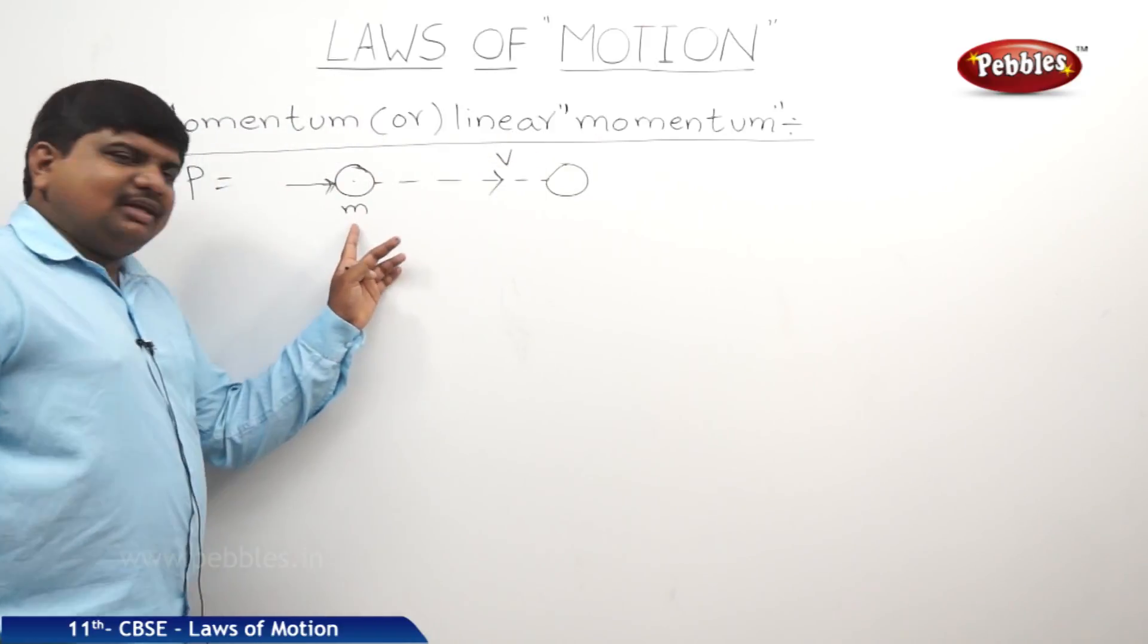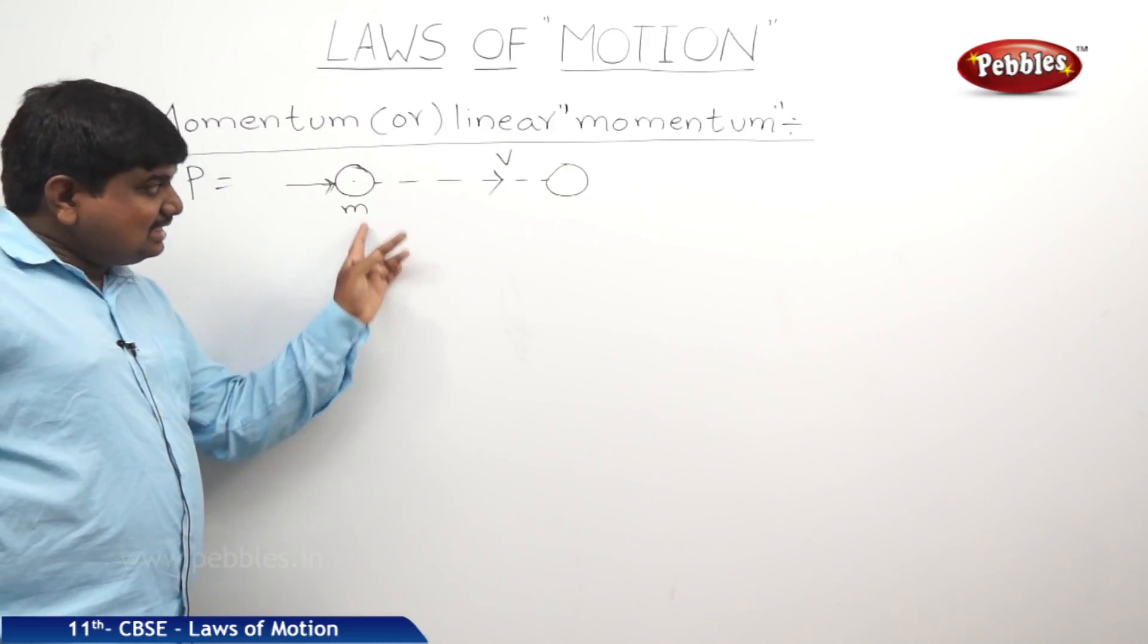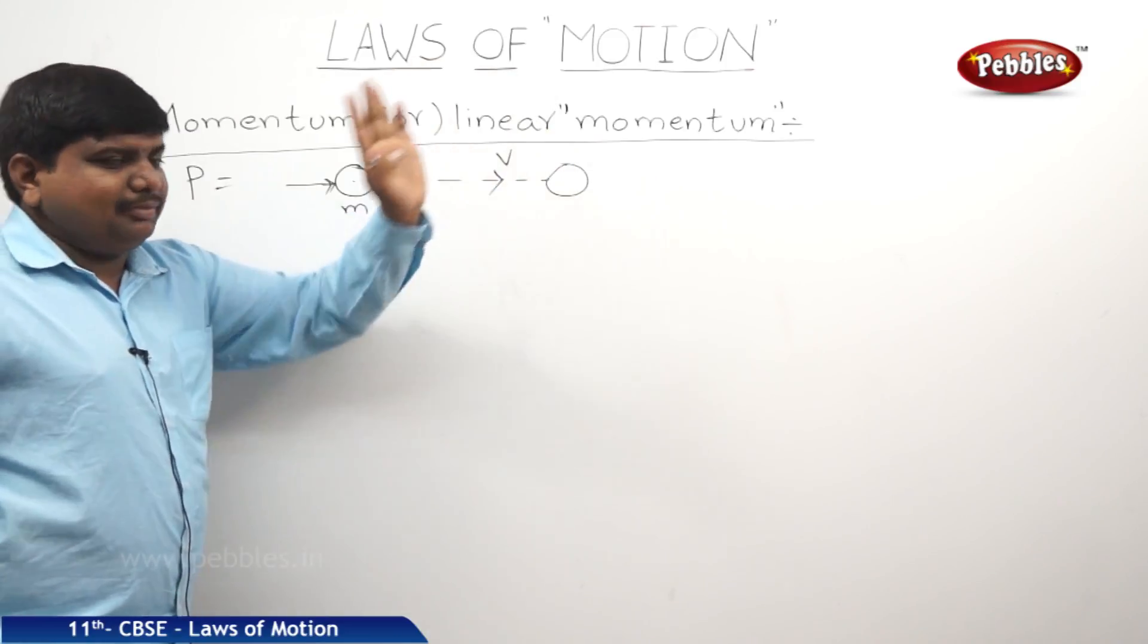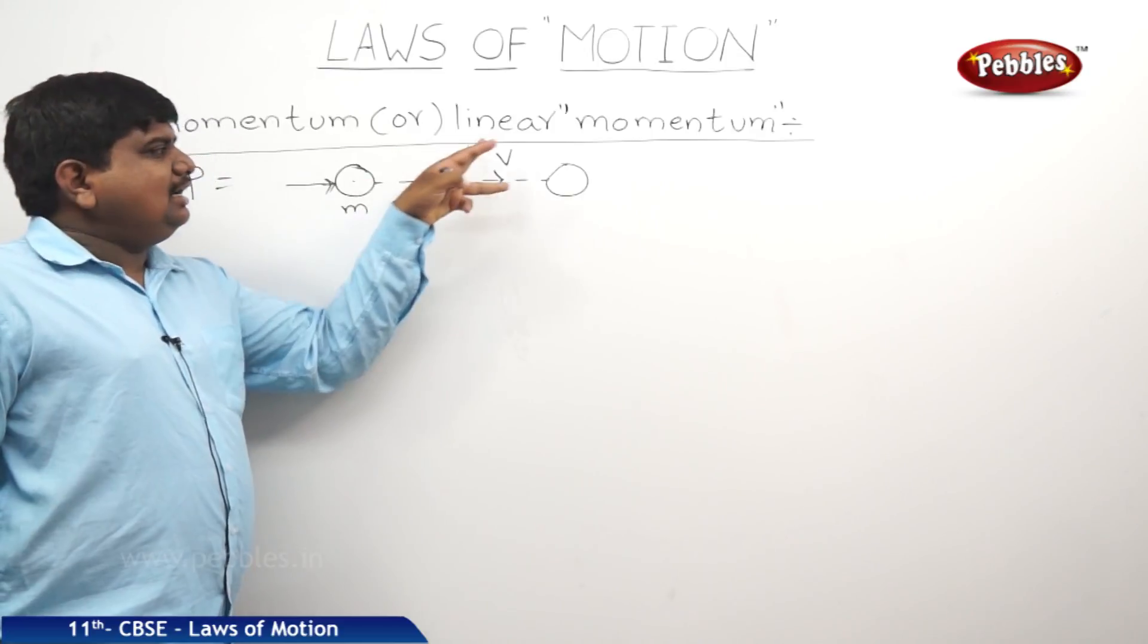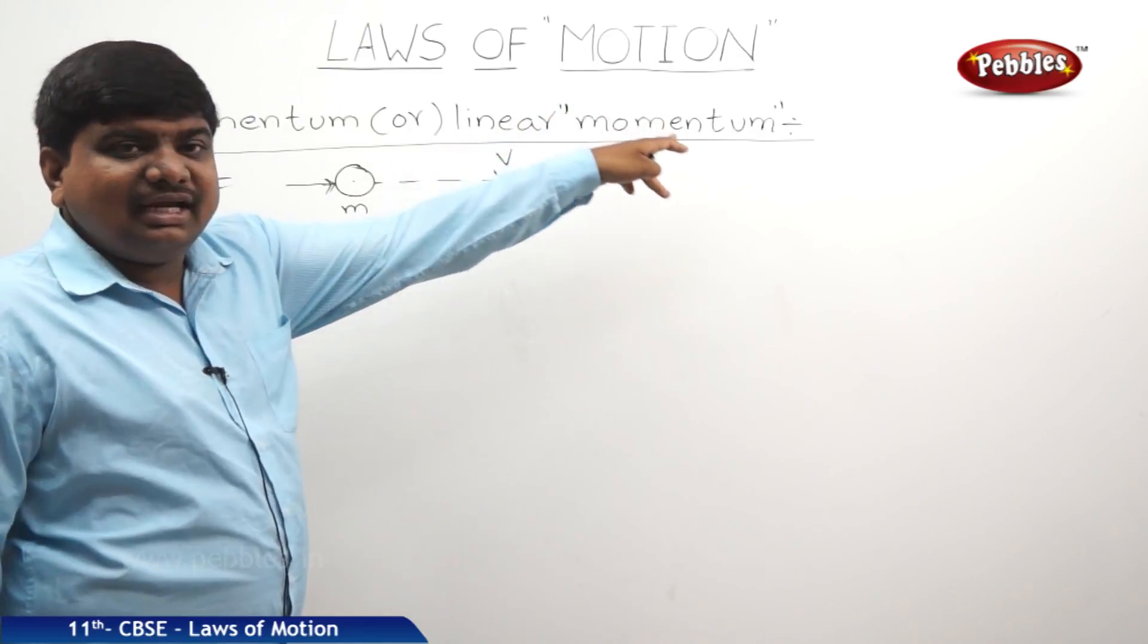So the product of the body's mass and its velocity is called momentum. The product of the mass of body and its velocity is called its momentum.